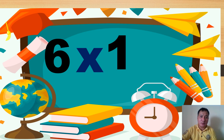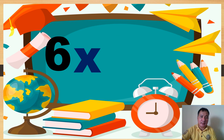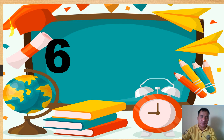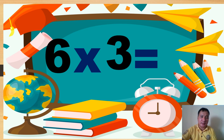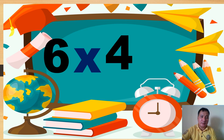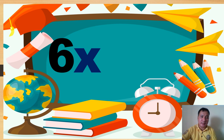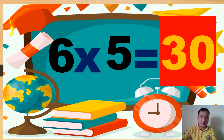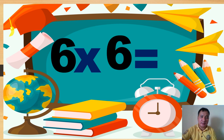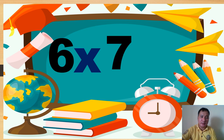Six times one equals six. Six times two equals twelve. Six times three equals 18. Six times four equals 24. Six times five equals 30. Six times six equals 36. Six times seven...